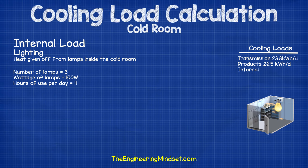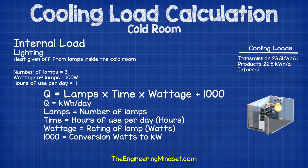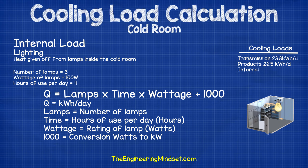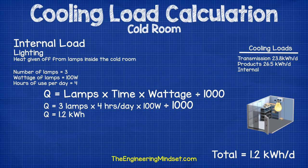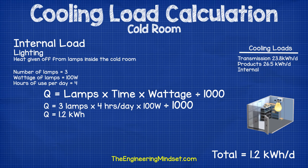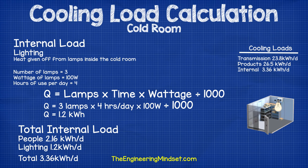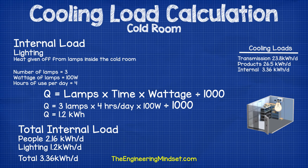Then we calculate the heat generated by the lighting using the formula q equals lamps multiplied by time multiplied by wattage divided by 1000, where lamps is the number of lamps, time is hours of use per day, and wattage is the power rating of the lamps. With three lamps at 100 watts each running for four hours a day, these give off around 1.2 kilowatt hours of heat per day. Summing the people and lighting loads gives a total internal load of 3.36 kilowatt hours per day.